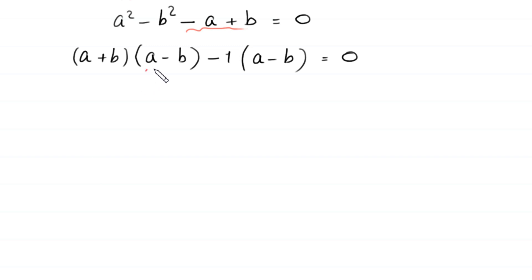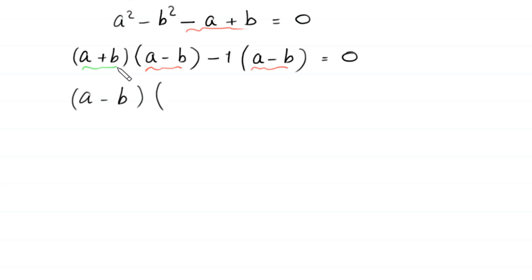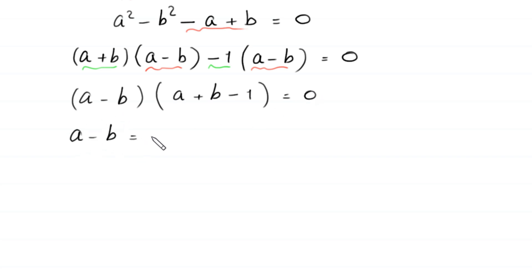Now this expression A minus B is a common factor. So we factor out A minus B, leaving in bracket A plus B minus 1, equal to 0. From here, either A minus B is equal to 0, or A plus B minus 1 is equal to 0.